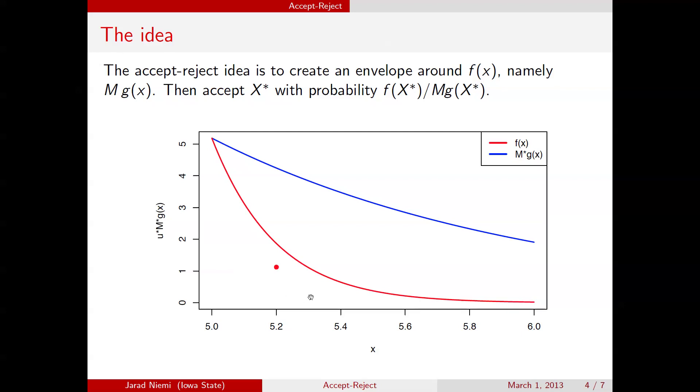So here's the first example. This first example, x was 5.2. And this uniform times this quantity right here, this is m times g of x, where x, u is 5.2. So this is m times g of 5.2.